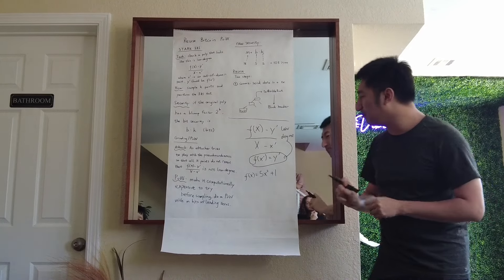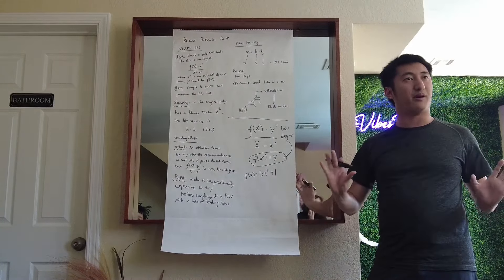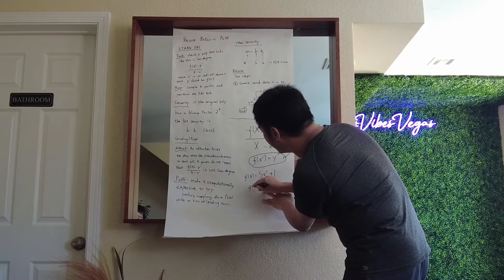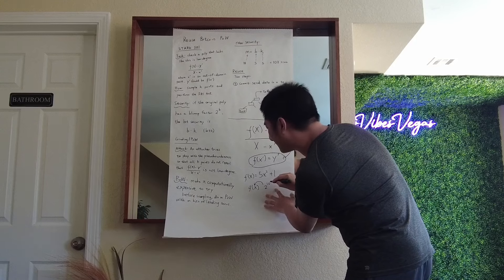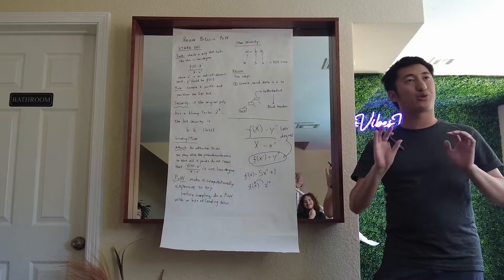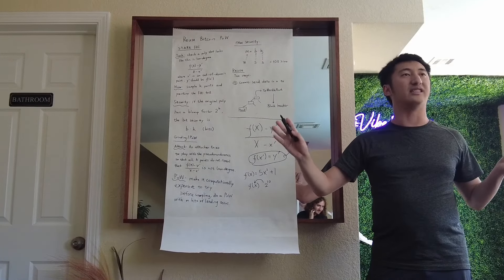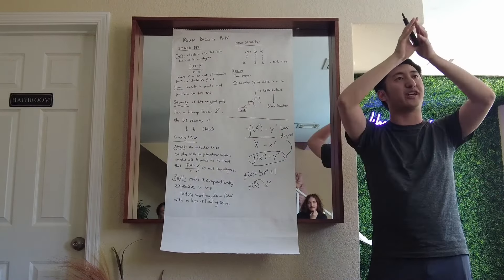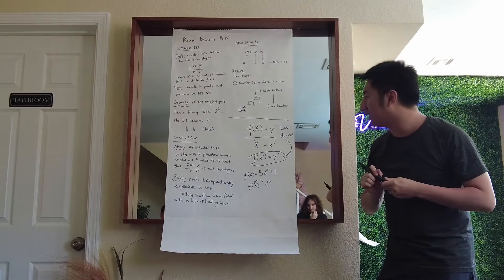What you do is create a Merkle tree of this polynomial. You evaluate the polynomial — let's say on 2^10 different locations — and then commit this evaluation in a Merkle tree, so that you can later open one of them and test on them.